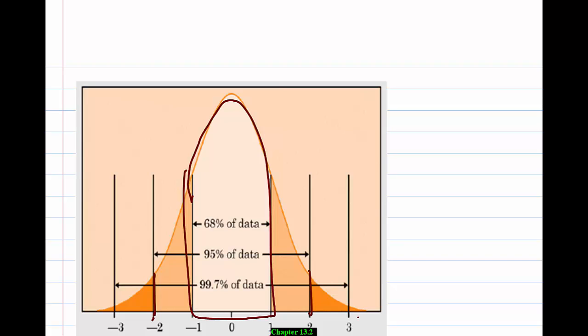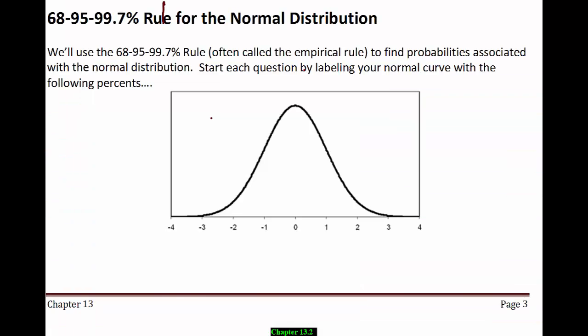Now you can understand what a standard deviation is a little bit better. It gives us a guideline, kind of a yardstick, for where we can expect most of our observations to lie. To use the 68, 95, 99.7% rule — also called the empirical rule — to compute probabilities, we're always going to start each question by labeling our normal curve in the following way.